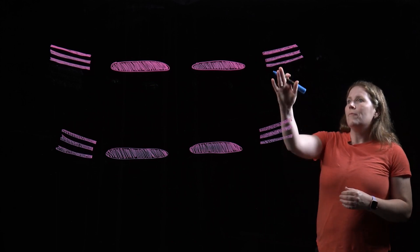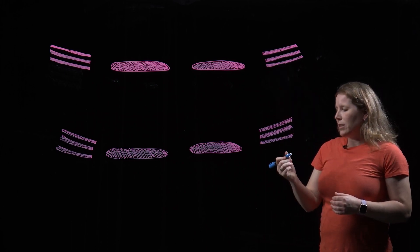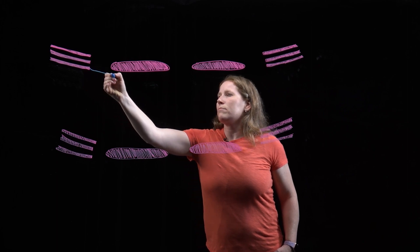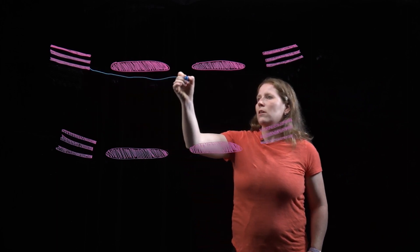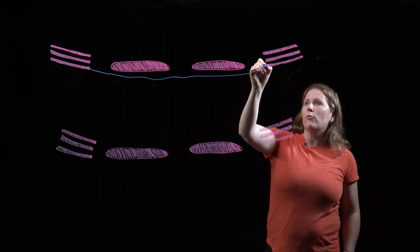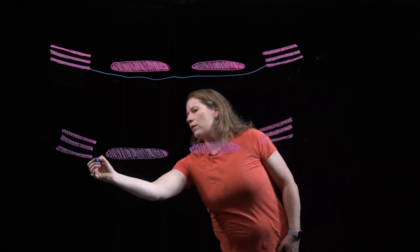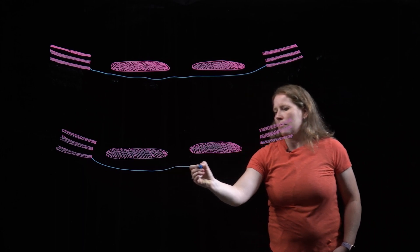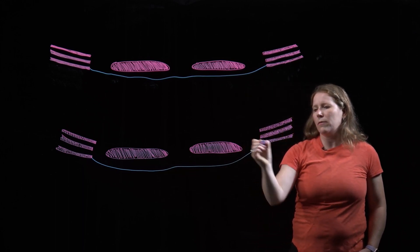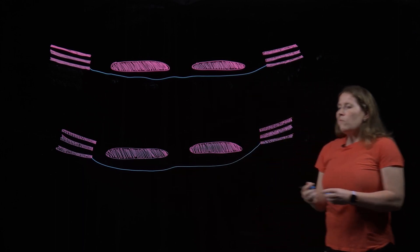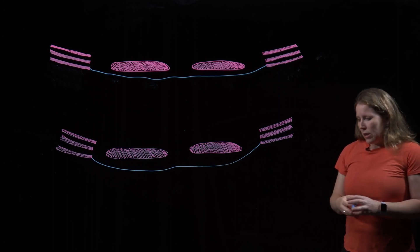So the external oblique is going to have an aponeurosis that will always pass anterior to the rectus abdominis muscles, regardless of whether you are above or below. So we'll draw that like this. Okay, that's the aponeurosis of the external oblique.